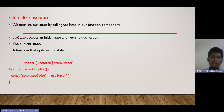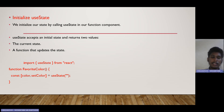Here, firstly we imported useState from React. Consider this example where a function favoriteColor is declared. Inside the function, we declared color, which is a variable or a state. And setColor is the function which sets this color.